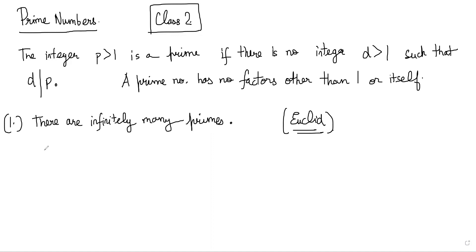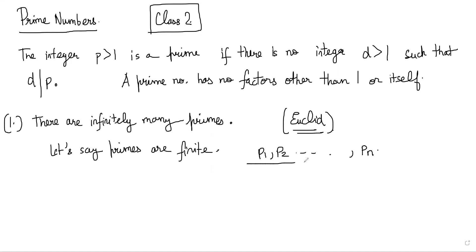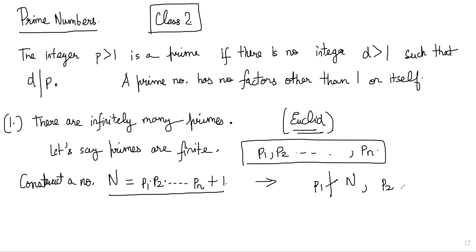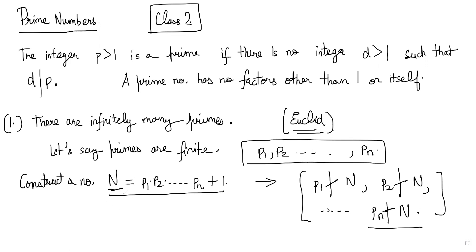So what you say is: let's assume primes are finite, and call them p1, p2, ..., pn — there are n total primes. Now construct a number N equal to p1 × p2 × ... × pn + 1. You will realize that p1 does not divide N, p2 does not divide N, and therefore all the prime numbers pn also don't divide N. So the only thing that can divide N is 1 and N itself, meaning N is a prime.